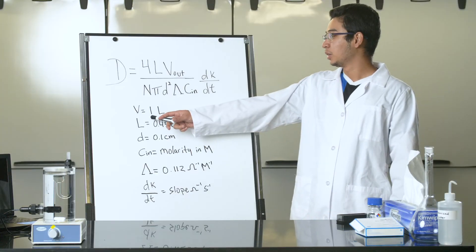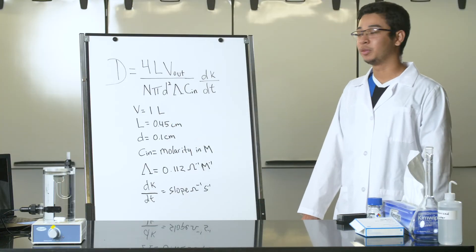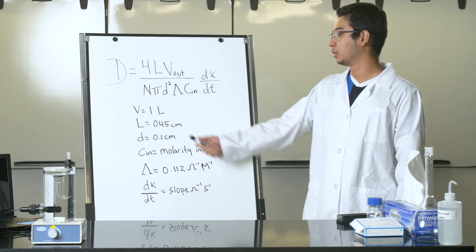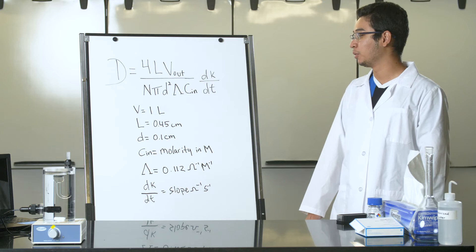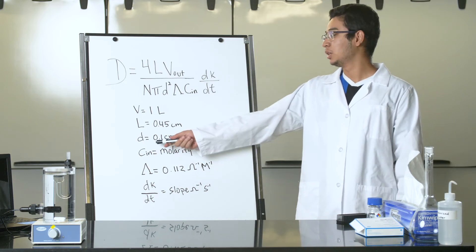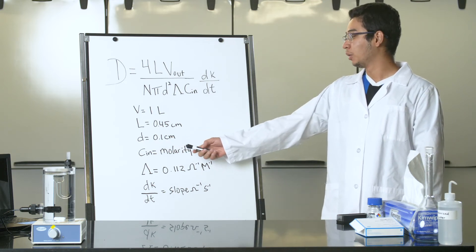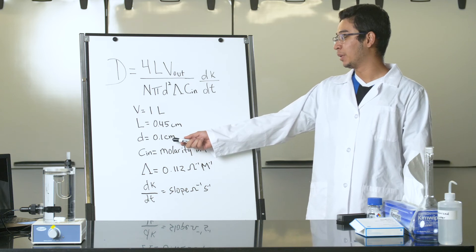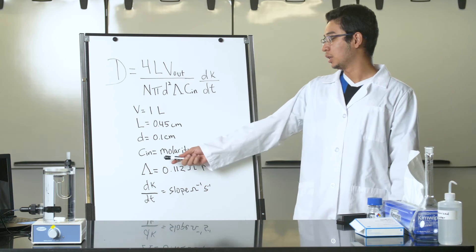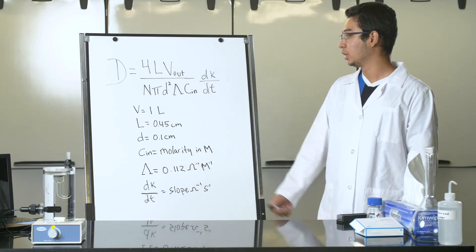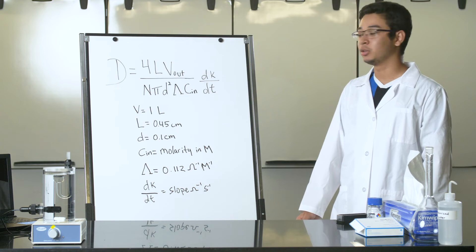Where V is the volume of the outer vessel and has a value of 1 liter. L is the length of the capillaries and has a value of 0.45 centimeters. D is the diameter of the capillaries and has a value of 0.1 centimeters. C is the molarity of the solution and it depends on what value you want to use.